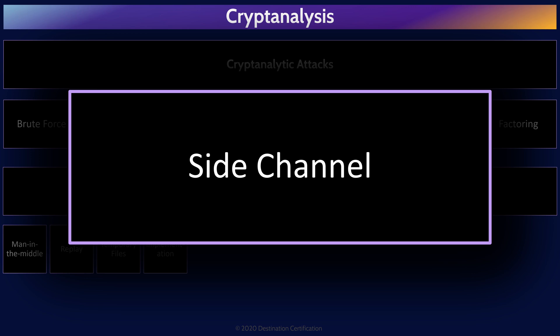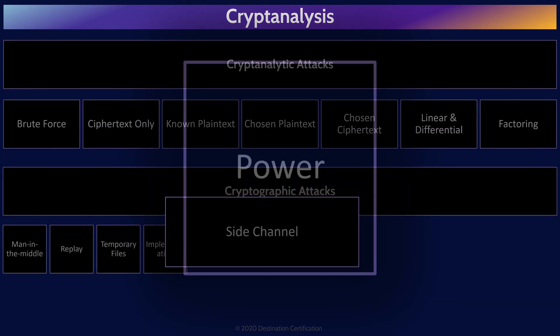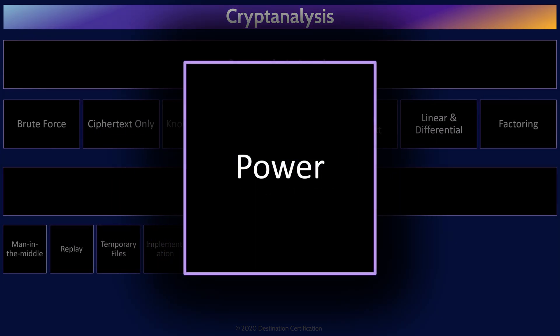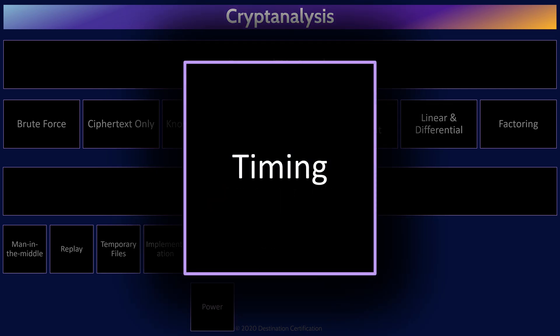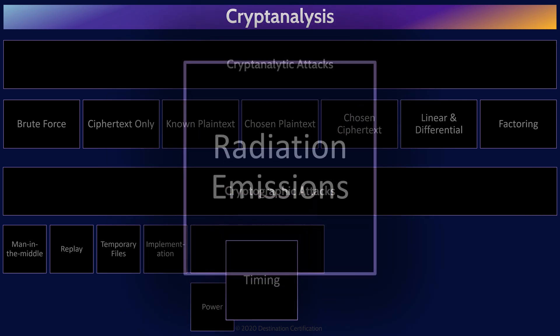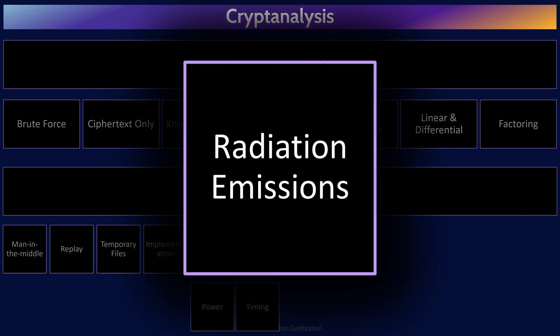Side channel attacks are any type of attack where sensitive information is gathered by carefully monitoring a system performing cryptographic tasks. Power side channel attacks measure how much power is consumed by certain calculations. Timing attacks measure how long certain operations take. And in side channel radiation emission attacks, the electromagnetic waves emanated by a system are closely monitored.